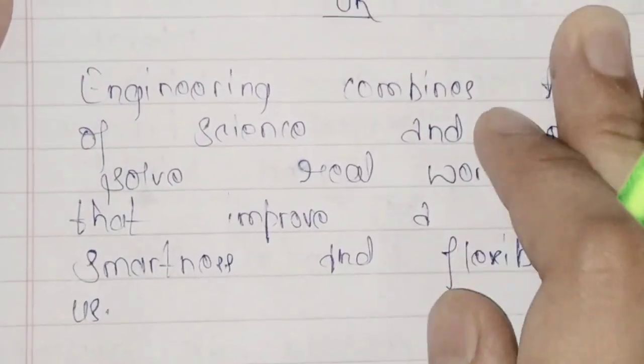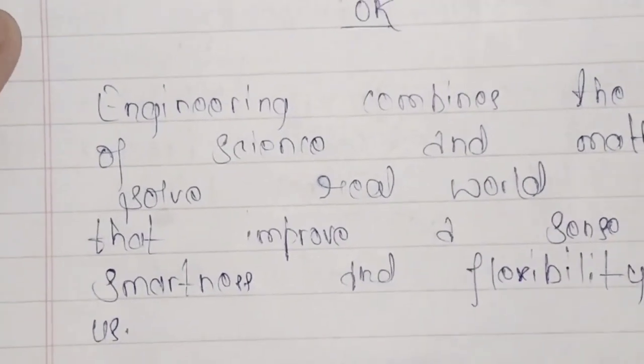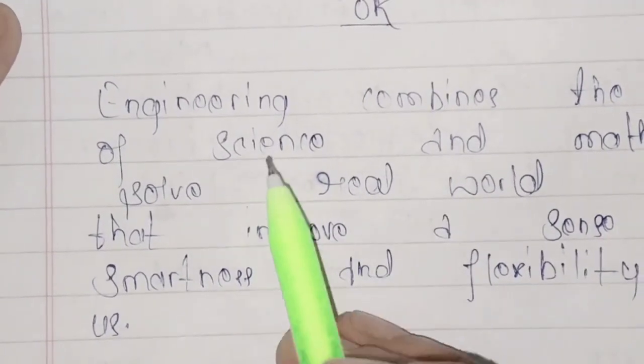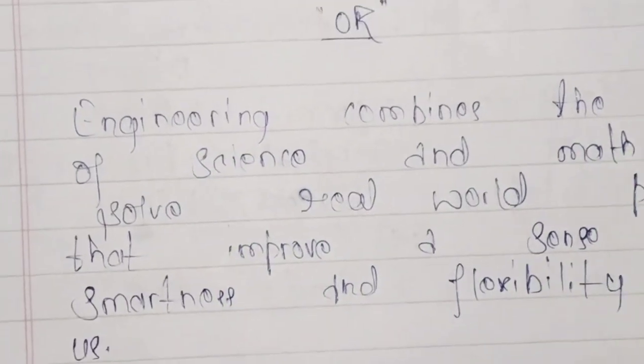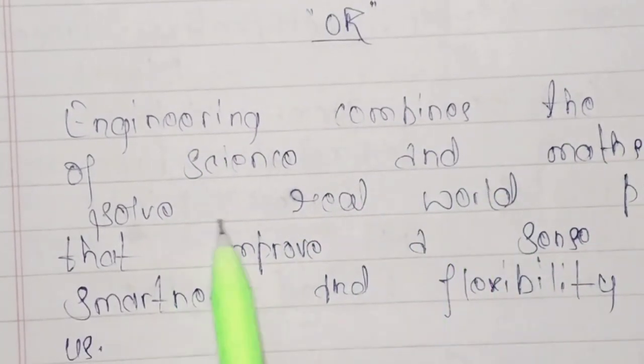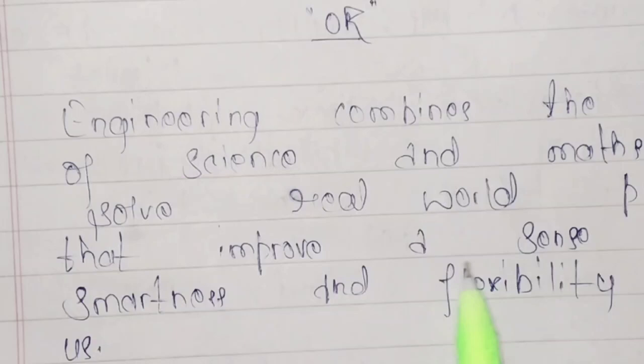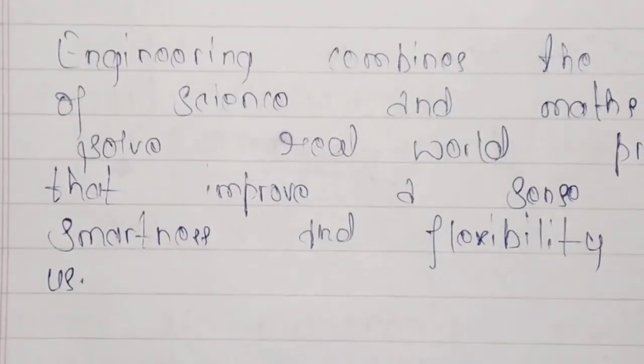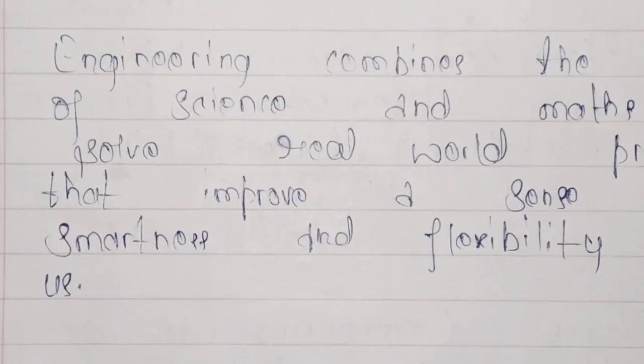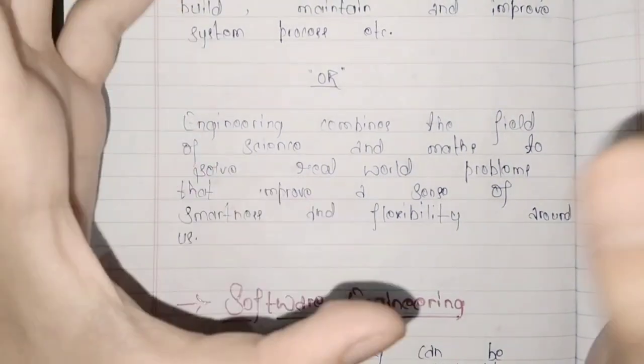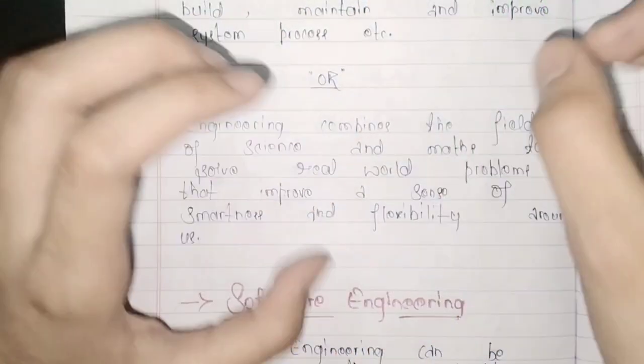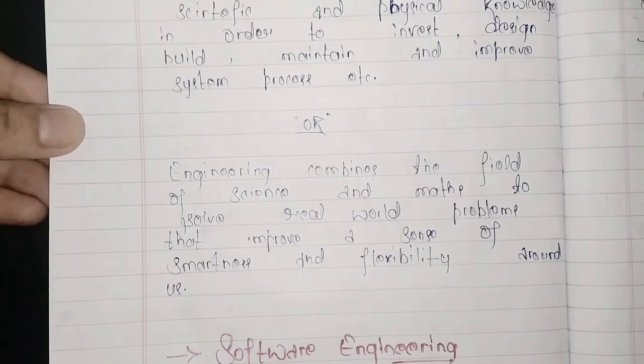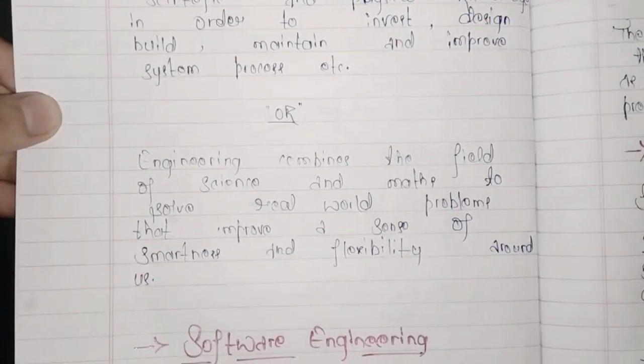If we want to define engineering in another way, then it will be easier. Let's see. Engineering combines the field of science and maths to solve real world problems that improve a sense of smartness and flexibility around us. So what is engineering? It's a combination of science and maths. We combine some of our daily life problems that help us out.